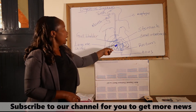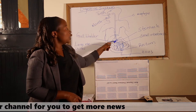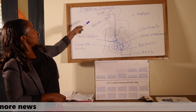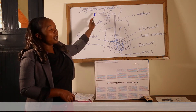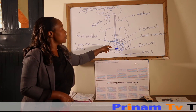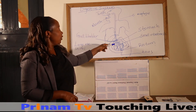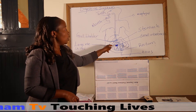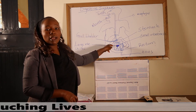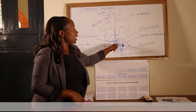Then from the small intestines, the food is further pushed into the large intestines. Remember, we said that digestion of food starts from the mouth and ends in the small intestines. So when the food particles are absorbed in the small intestines, the remaining particles are then taken through the large intestines.